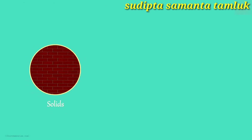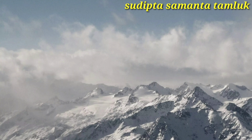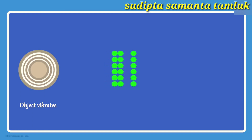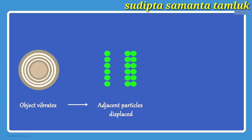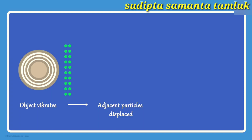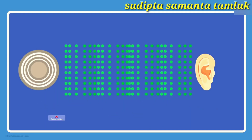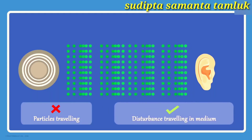We saw that sound can travel through solids, liquids, and gases. When an object is vibrating, it sets the particles of the medium around it into vibration. The nearest particles to the source get displaced from their mean or equilibrium position and collide with adjacent particles. Those particles then also get displaced and do the same to their neighbours. This process continues through the medium until the sound reaches our ear. It is not the particles that travel, but the disturbance produced by the source that travels through the medium.